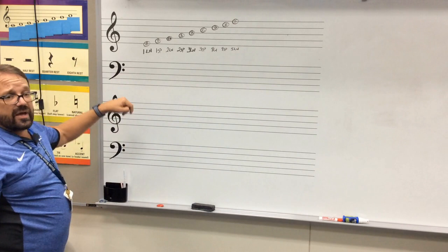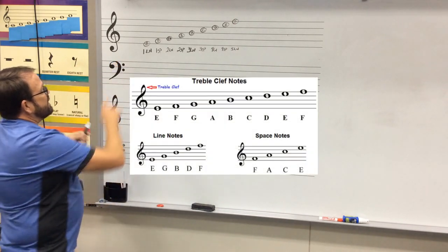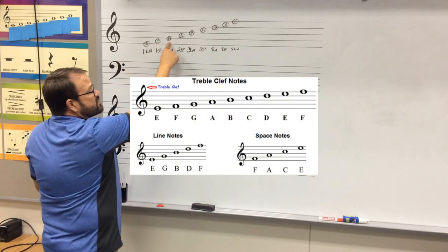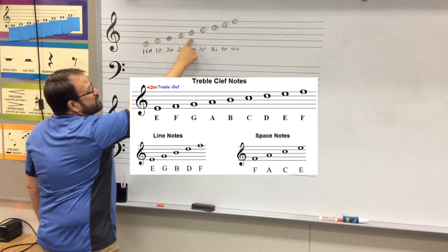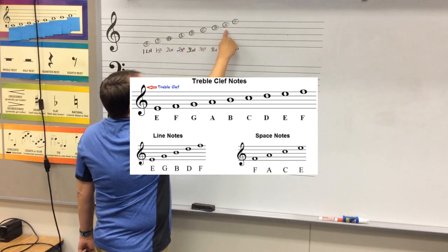So you'll notice it's a musical alphabet. We started on E. E, F, G. After G we repeat back to A, B, C, D, E, F.